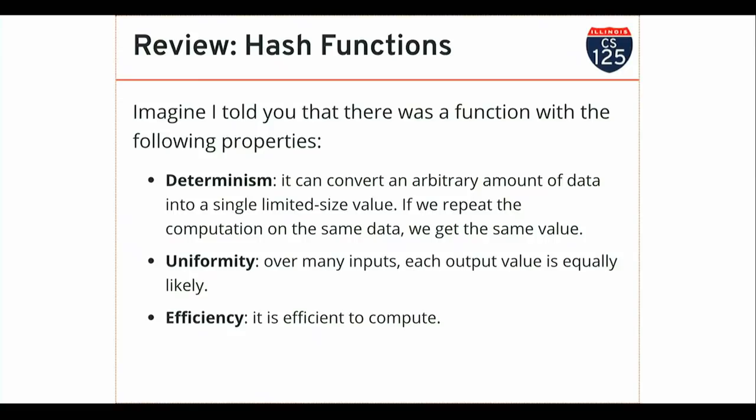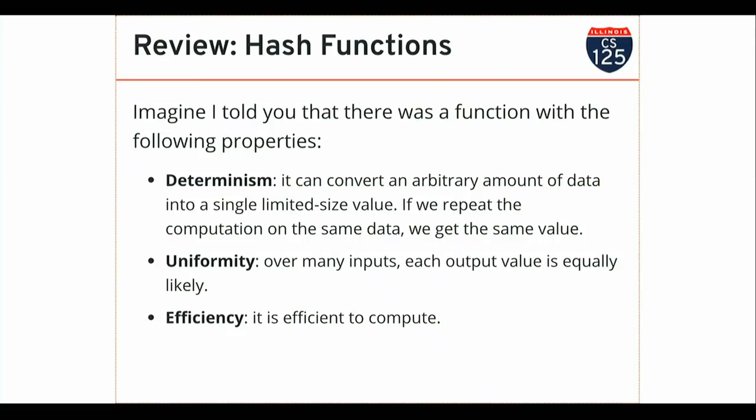And over the range of that value, I have an equal chance of getting any result. We refer to something with this property as a hash function, and we refer to the result using a variety of terminology — sometimes just as a hash, sometimes as a hash value, sometimes as a hash code or a digest. I will typically call it the hash of a particular value.